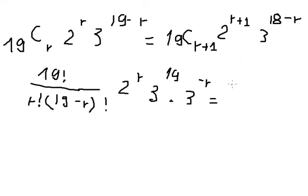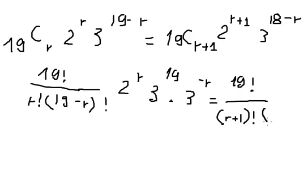And 19C(r+1) can be written as 19 factorial over r plus 1 factorial, multiplied by 18 minus r factorial. Then we have 2 to the power of r plus 1.